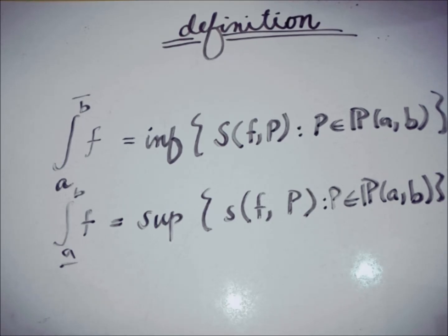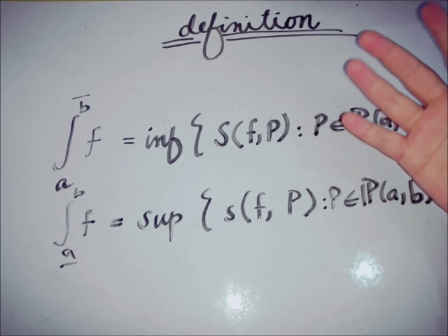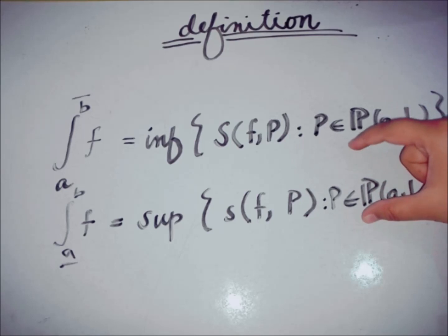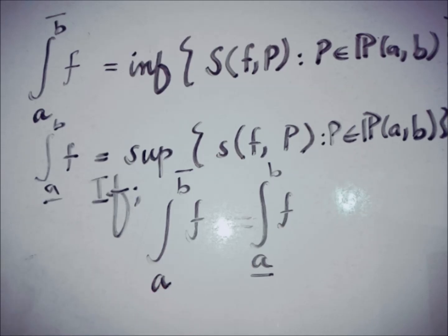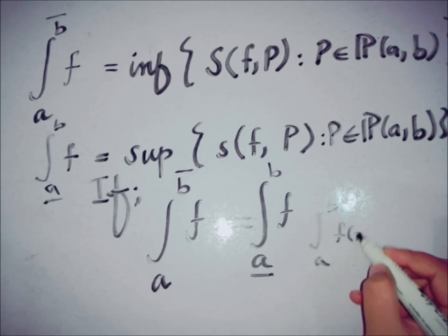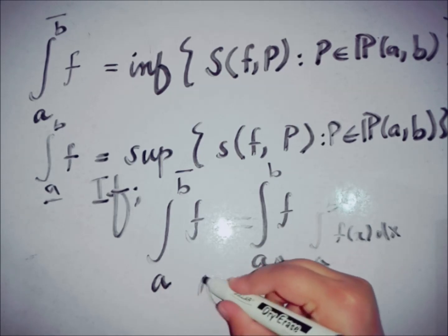The upper sum and lower sum are different, but there comes a point when the Riemann upper sum and the Riemann lower sum may have the same value. If the upper and lower integrals have the same value, then we can say that the function f is Riemann integrable. This is the condition for being a Riemann integrable function, expressed in the familiar form of the integral from A to B of f(x) dx.